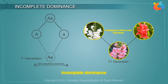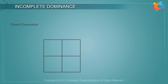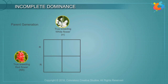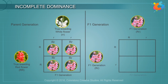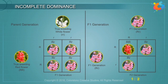The inheritance of flower colour in the snapdragon (Antirrhinum sp.) is a good example of incomplete dominance. In a cross between true breeding red flower plants (RR) and true breeding white flower plants (rr), the F1 (Rr) was pink. When the F1 was self-pollinated, the F2 resulted in the ratio: 1 RR red : 2 Rr pink : 1 rr white.